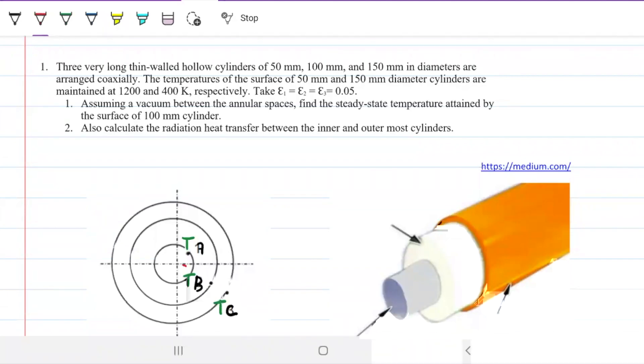Three very long, thin-walled hollow cylinders of 50, 100, and 150 mils in diameter are arranged coaxially. So we have one, the small one is inside, the bigger one is next, and so on.